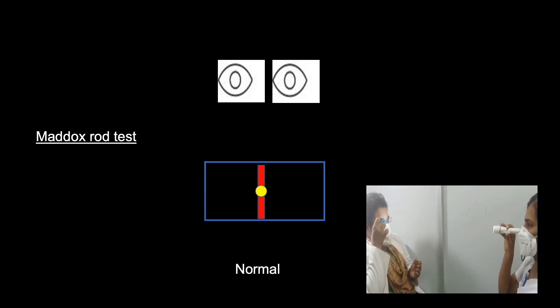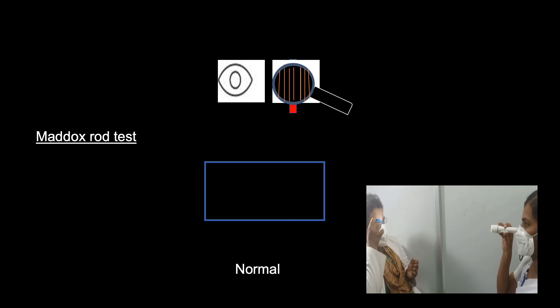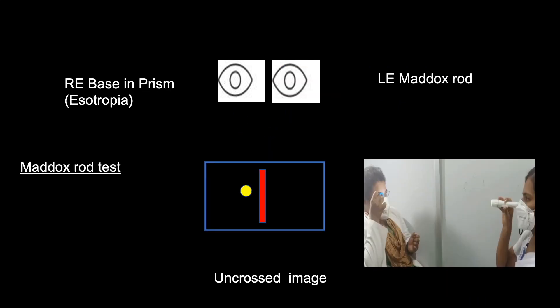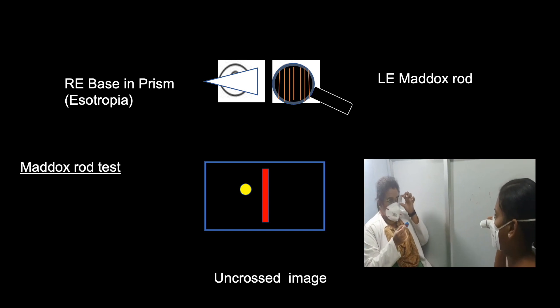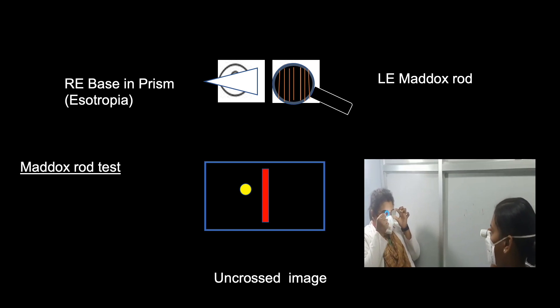The next one is the Maddox rod test. Red Maddox rod converts white spot of light into a red streak. When the base in prism is placed in front of the right eye making the eye esotropic, we can see an uncrossed image.